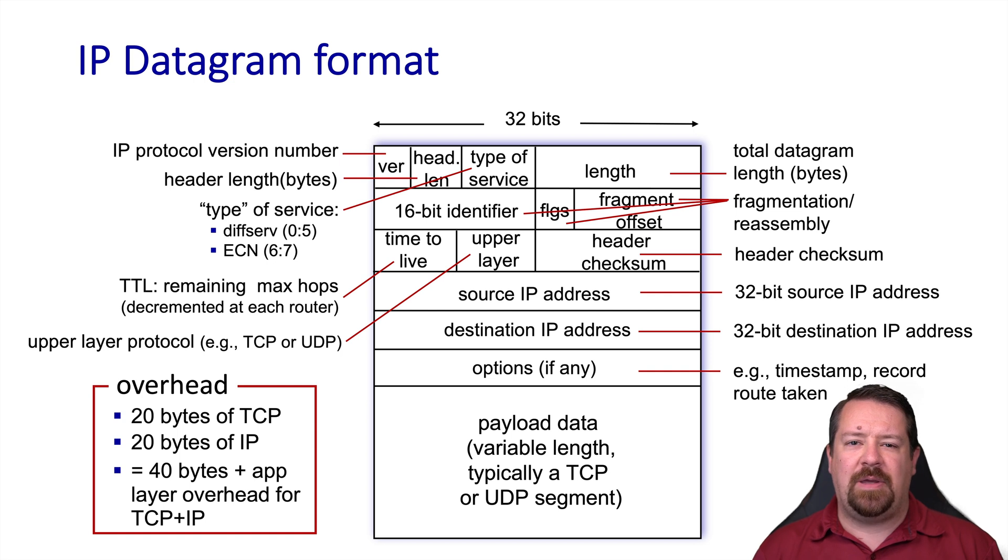In the last video we talked through the IP header fields, including some that are dedicated to fragmentation and reassembly, but we didn't talk about how that fragmentation and reassembly actually works. In practice, fragmentation and reassembly are not used very often. However, they are part of the IP protocol and if you're not aware of how they work, it could end up happening when you're not expecting it and cause negative performance impacts. So we're going to do a quick video about how fragmentation and reassembly work in IP.